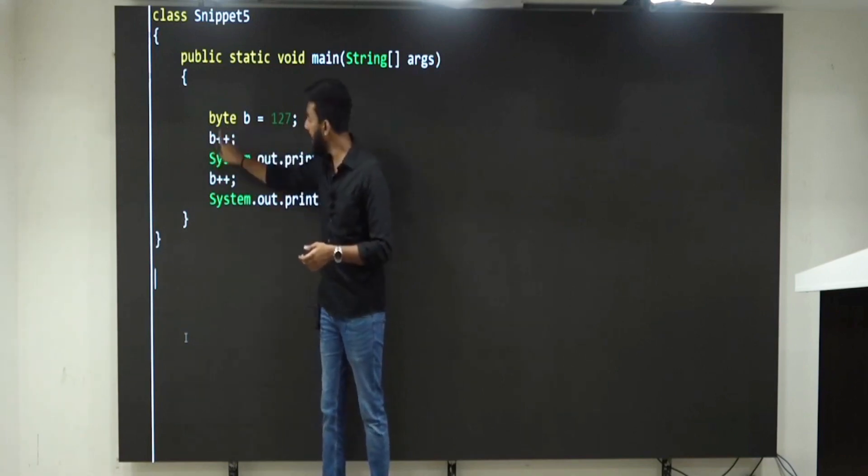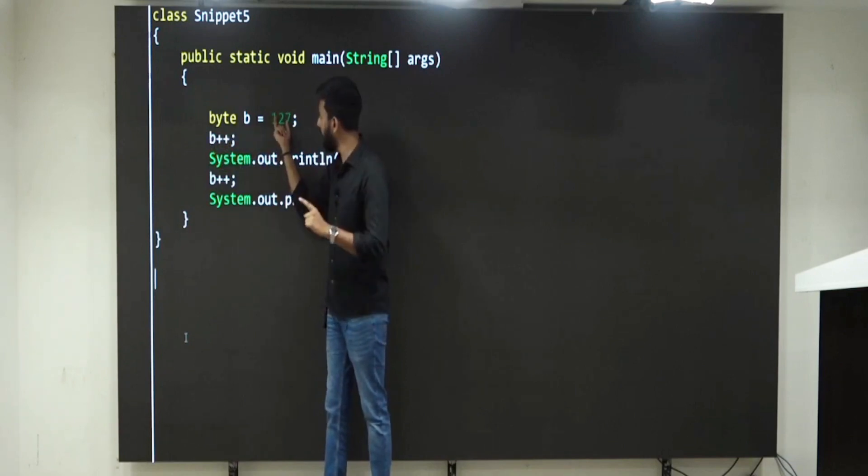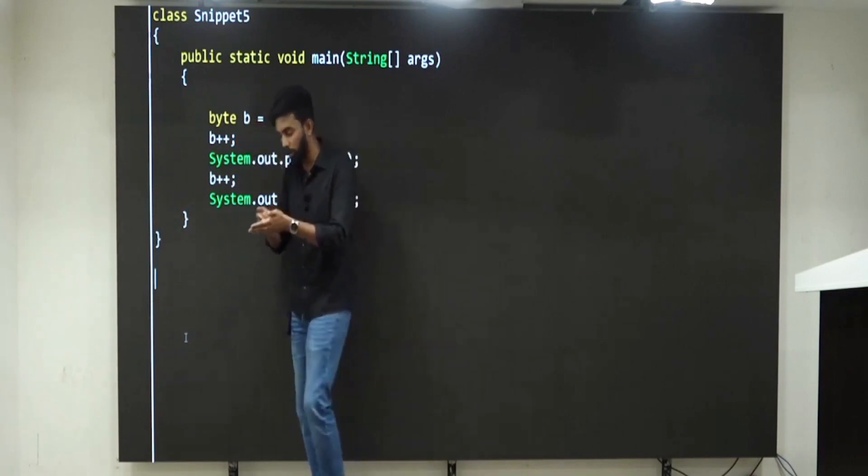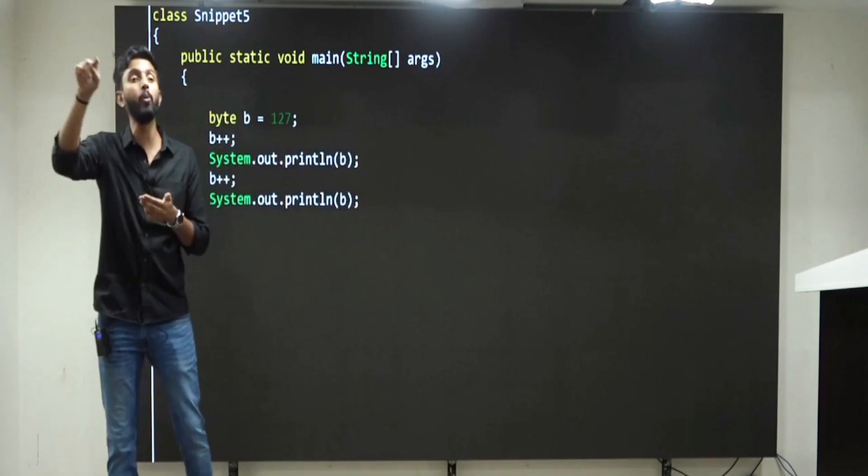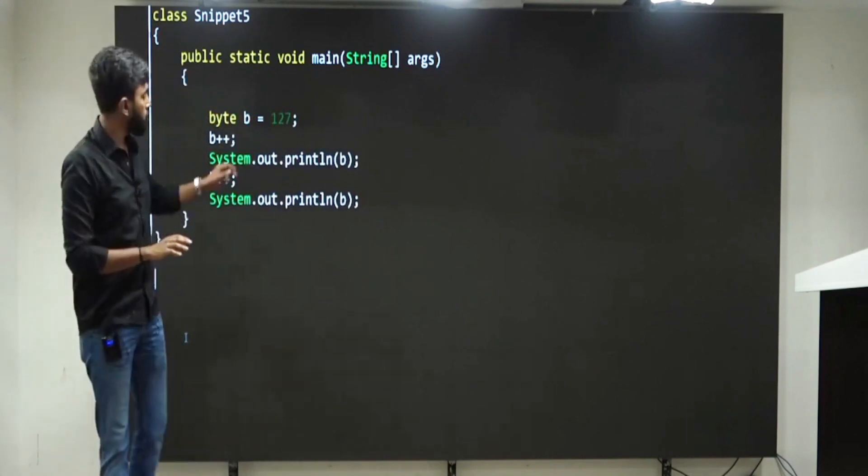b plus plus. Plus plus means increase the value by 1. If I increase by 1, what will become? 128. Can 128 be stored inside a byte? No, because you only told me maximum range is 127.